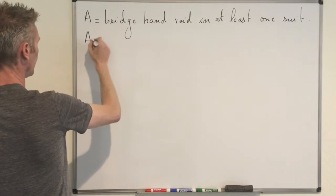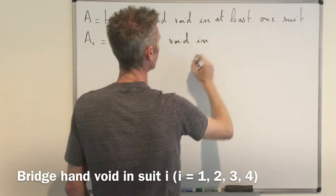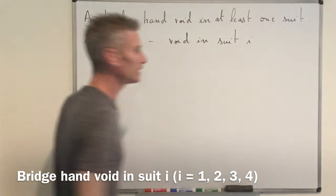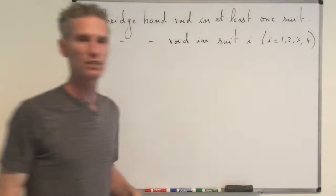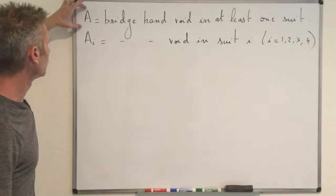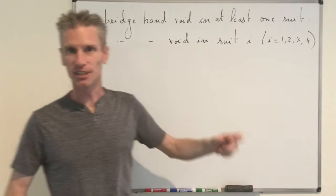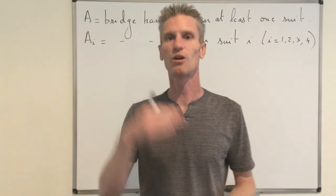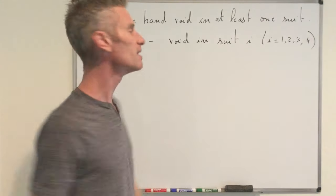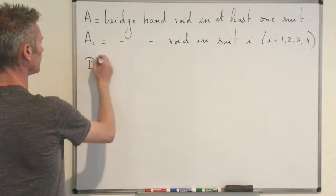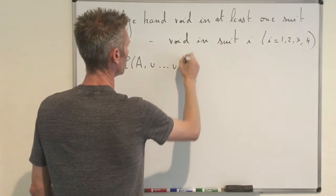We introduce the event A_i — the event that the bridge hand is void in suit i — defined for i = 1, 2, 3, 4. Then clearly A equals A1 union A2 union A3 union A4. The number the author derived is exactly P(A1) + P(A2) + P(A3) + P(A4), but that is not the probability of the union because those events are not mutually exclusive.